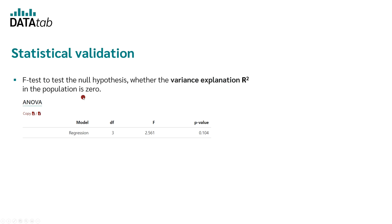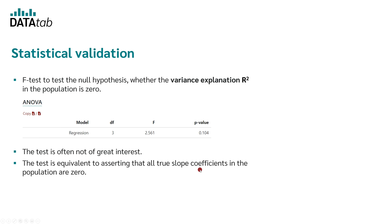Next, the ANOVA table is displayed, where the F-test is calculated. The F-test tests the null hypothesis whether the variance explanation R squared in the population is 0 — equivalent to asserting that all true slope coefficients b1, b2, up to bk are 0 in the population. In this example, because we have a very small dataset, the results show the null hypothesis cannot be rejected: the p-value is greater than 0.05, so we assume based on available data that all coefficients are 0.